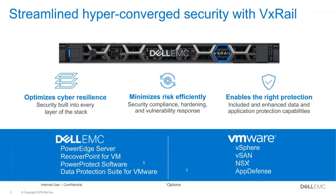We build security into every layer. VxRail is a server-based architecture — we leverage our own Dell EMC PowerEdge servers across the entire lineup, which are one of the most secure server offerings in the marketplace. I reiterate Intel quite often because they are one of our largest partners and one of the biggest value drivers inside the processing engines for VxRail.